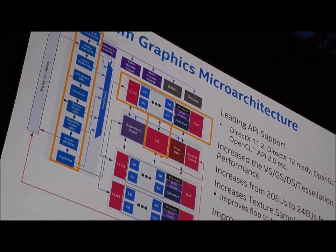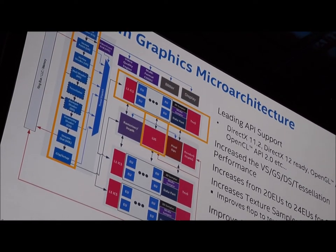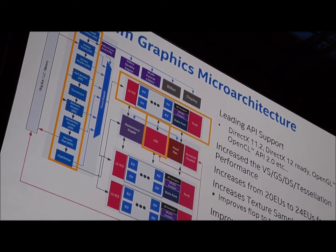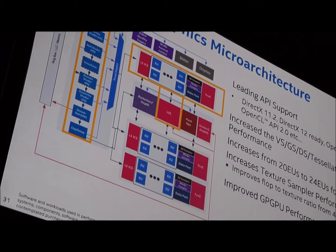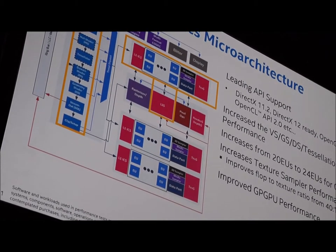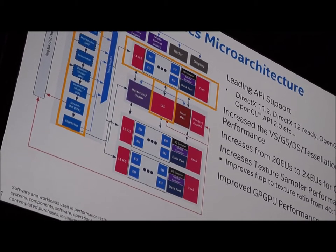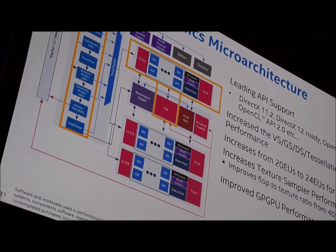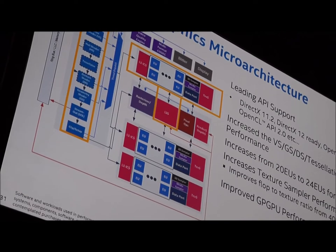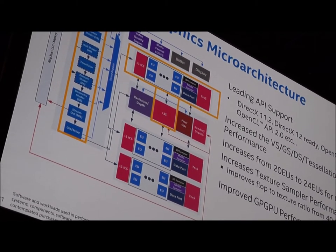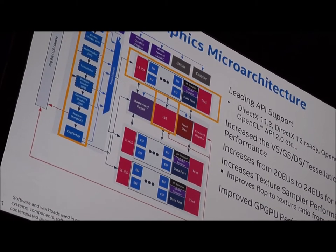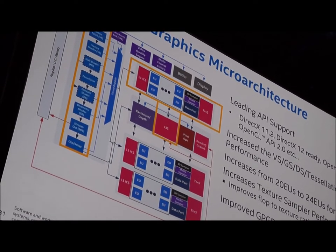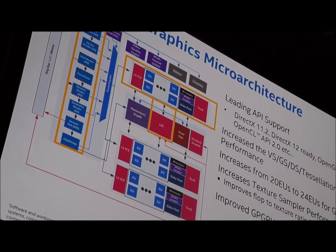Several GPGPU hooks have been added: atomics performance has been significantly improved, and scatter-gather performance for both local and shared local memory has been significantly improved. The shared local memory footprint has been increased by 50% and its bandwidth increased by 50% to feed the three connected subslices.